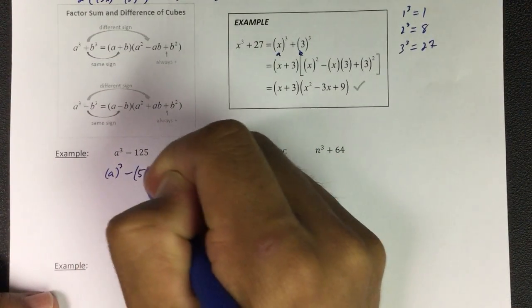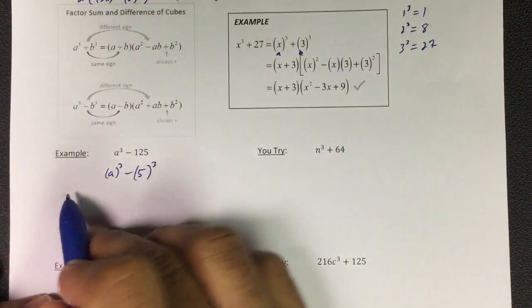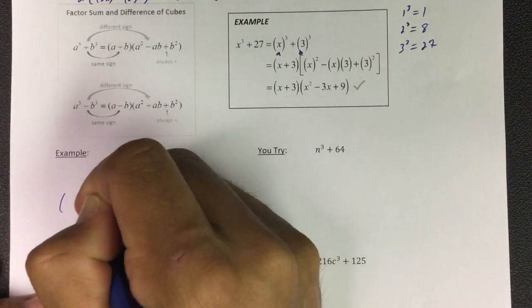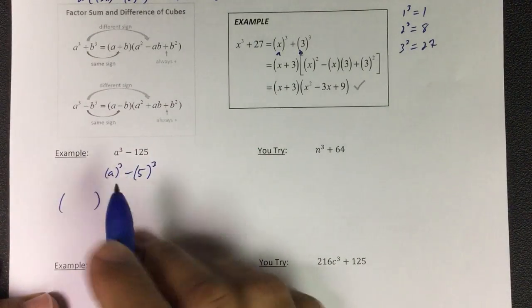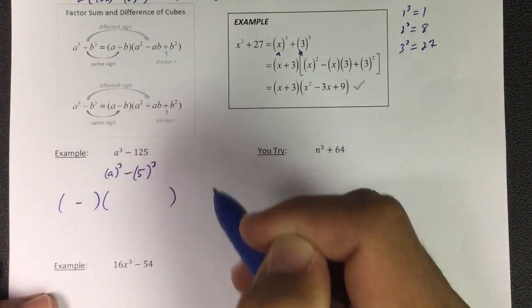Minus 5 to the third power. I'm gonna write it under, but I know I'm gonna have a binomial. This is a minus, so it'll have a minus on the inside, and then I'm gonna have a trinomial.